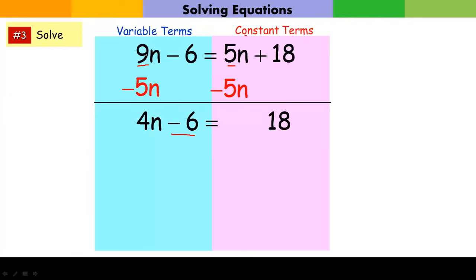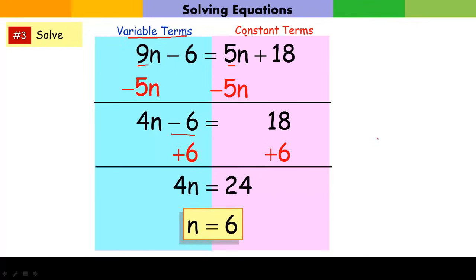Now I want to get rid of my constant from my variable side, so I add 6 to both sides. Negative 6 and a positive 6 gets rid of the variable. On this side I have a variable term, on this side I have a constant exactly like I want. Now I can solve for n.